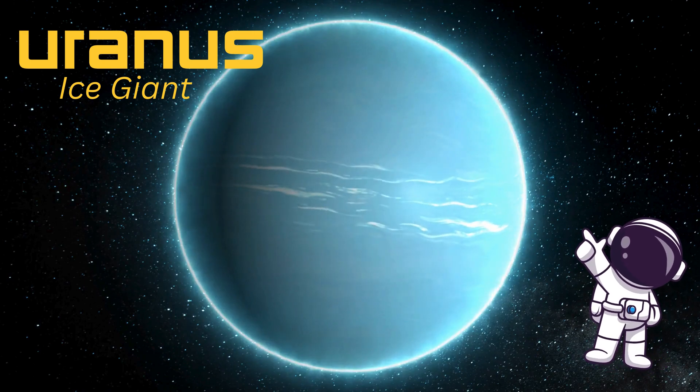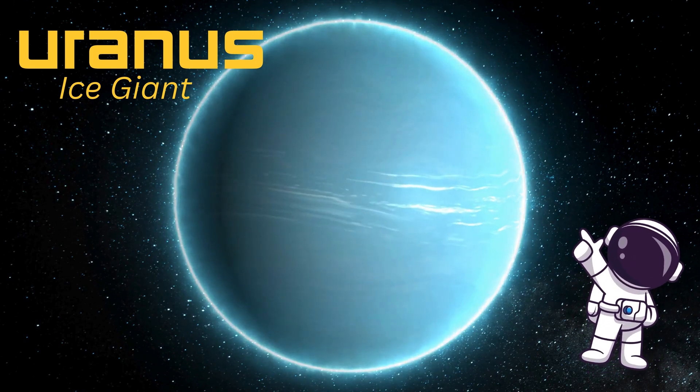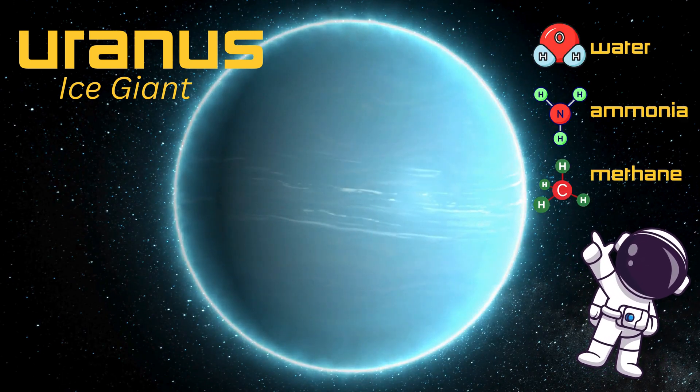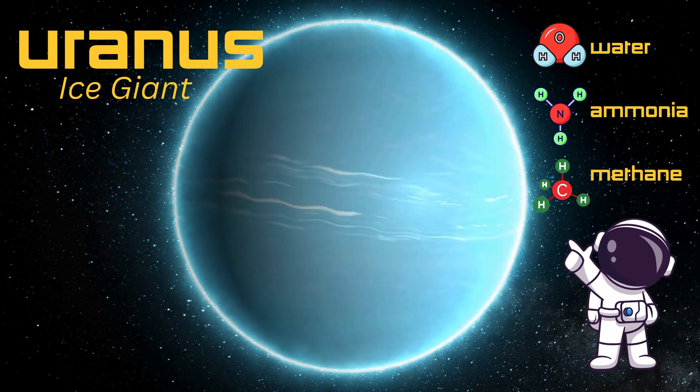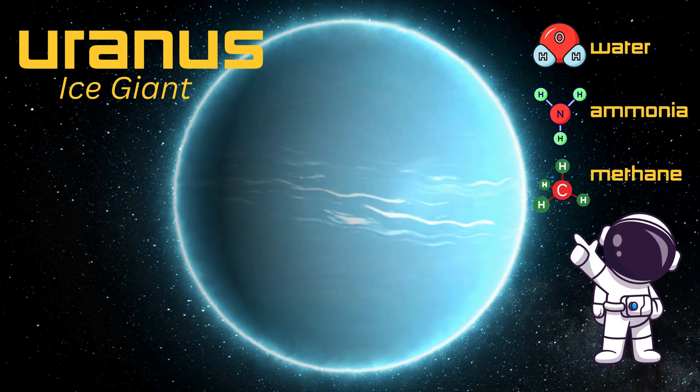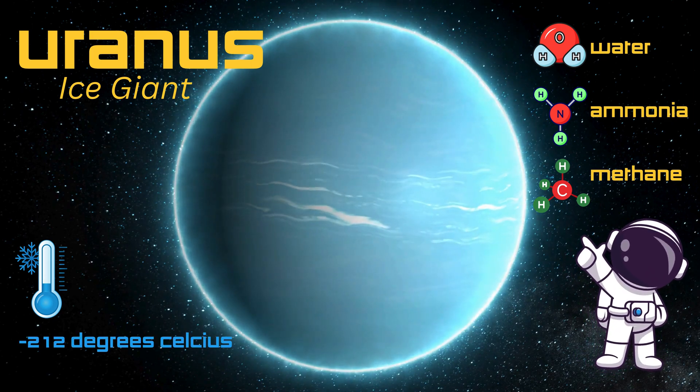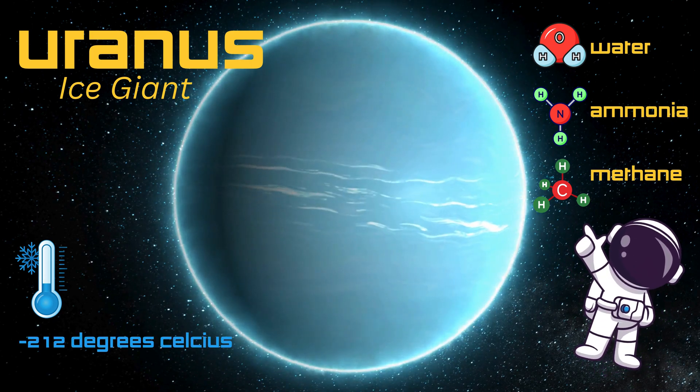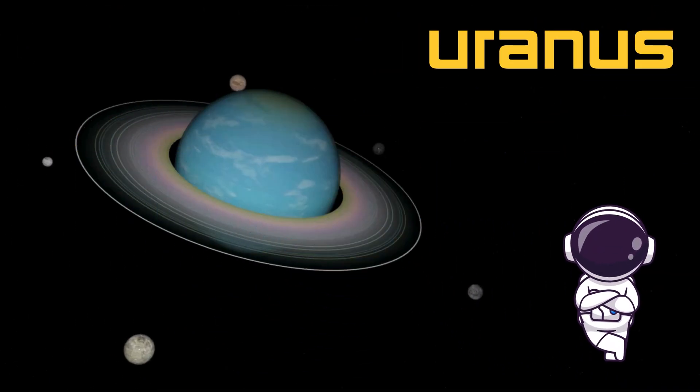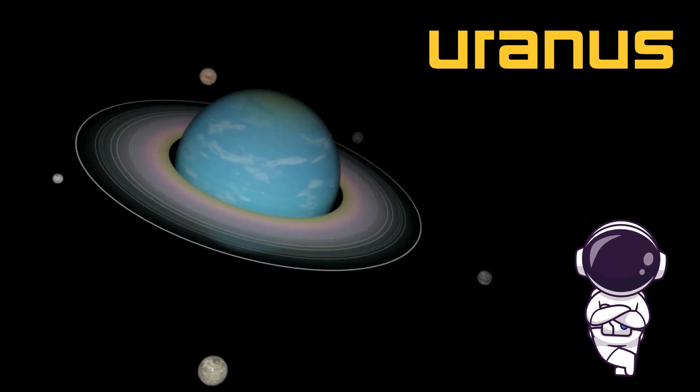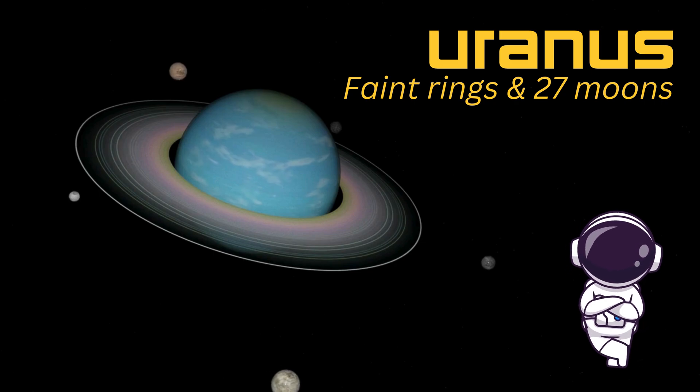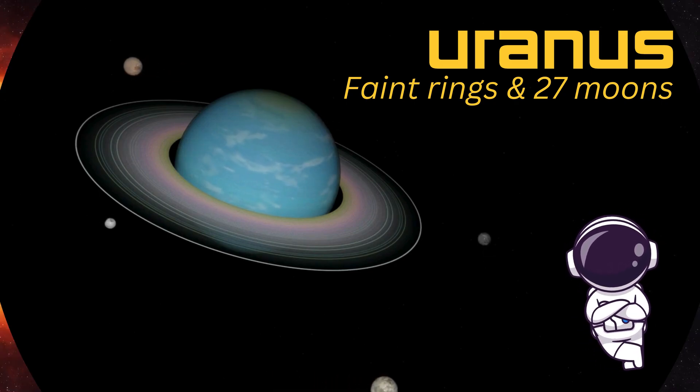Uranus is an ice giant, and it's made of icy gases like water, ammonia, and methane, giving it a cool blue-green color. It's also freezing cold, with temperatures dropping to minus 350 degrees Fahrenheit, minus 212 degrees Celsius. Talk about chilly. Uranus also has faint rings and at least 27 moons. What a cool planet.